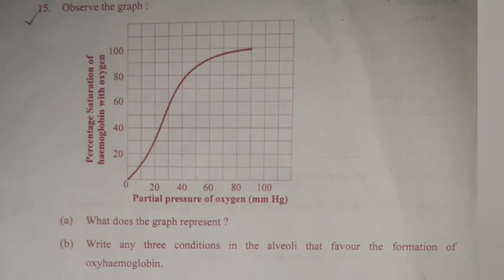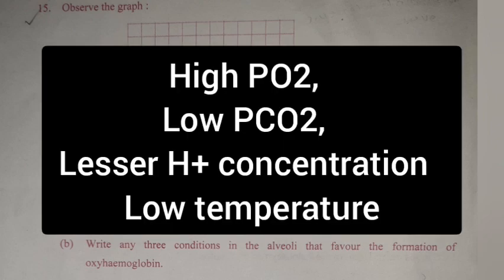Question 40 A: Observe the graph. What does the graph represent? Answer: A. Oxygen-hemoglobin dissociation curve. B. Write any three conditions in the alveoli that favor the formation of oxyhemoglobin. Answer: High PO2, low PCO2, lesser H+ concentration, low temperature.